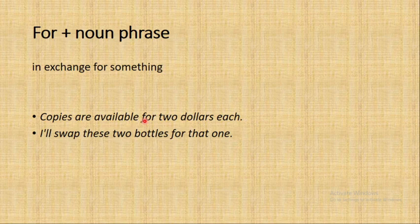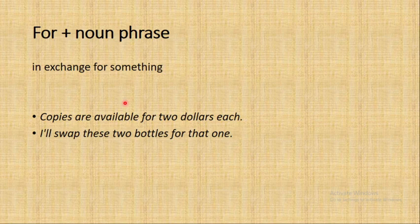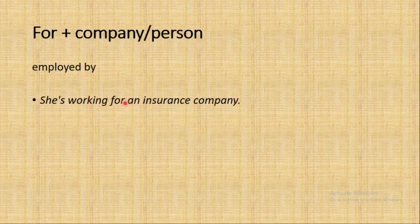For example: 'Fried rice is available for ten thousand rupiah each' — each serving of fried rice costs ten thousand rupiah. So this use of 'for' expresses value or price — what something is worth or costs.